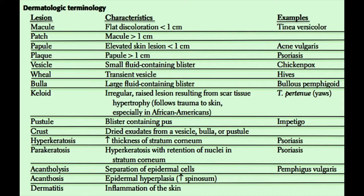Parakeratosis is defined as hyperkeratosis with retention of nuclei in the stratum corneum. The stratum corneum usually does not have nuclei, so if it does, we call that parakeratosis, and it is very characteristic of psoriasis. Then there's acantholysis, defined as a separation of epidermal cells from one another, seen in pemphigus vulgaris. There's also acanthosis, which is an epidermal hyperplasia — an increase in the number of cells in the spinosum layer. Lastly, dermatitis is simply defined as inflammation of the skin.